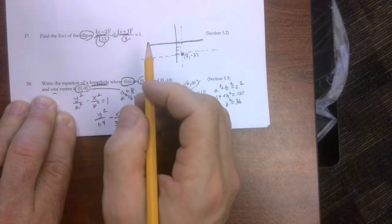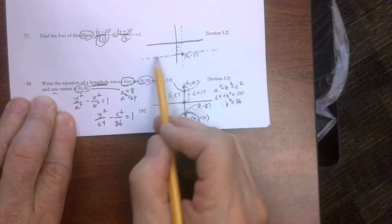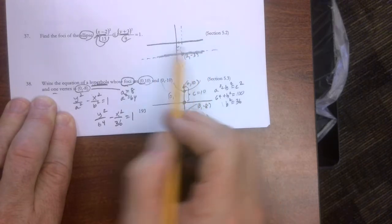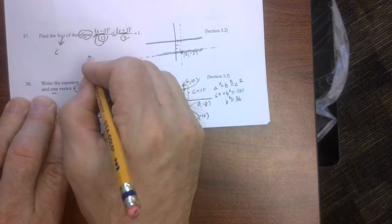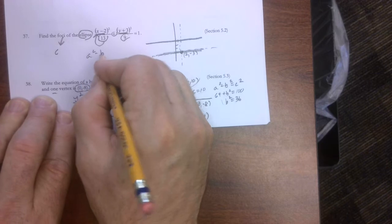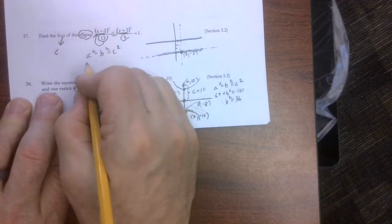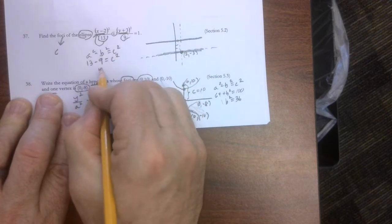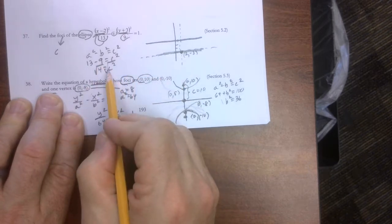Now because this is bigger than this, and this is underneath my x, I know that the foci are going to be on this axis. Now I don't need to draw the drawing perfect. What they're asking for is the foci. So we need to find c. Well this formula is a squared minus b squared equals c squared.